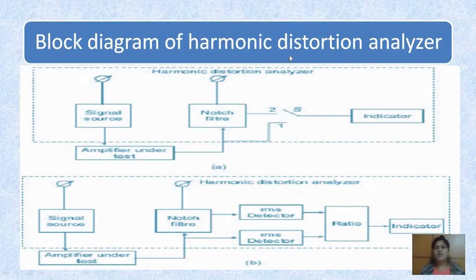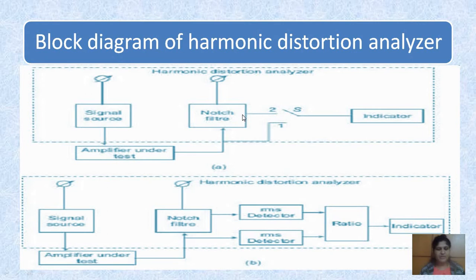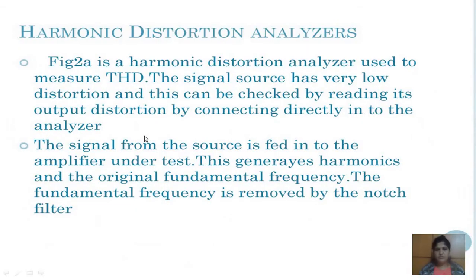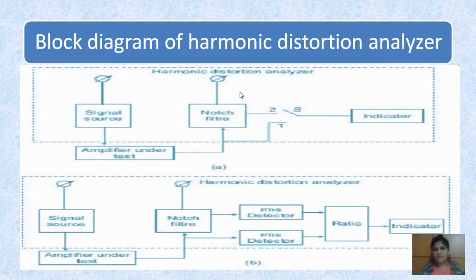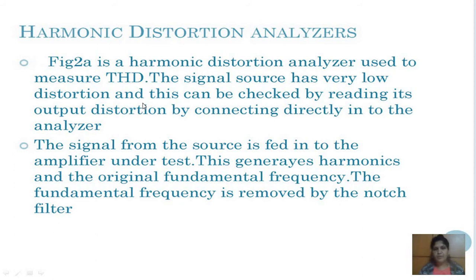This is the block diagram of the harmonic distortion analyzer. The first one is the manual system and the second is the automatic system. This block diagram is used to measure total harmonic distortion, and it consists of a notch filter which is used to suppress the fundamental frequency and pass only the harmonics. The signal source has very low distortion, which can be checked by connecting its output directly into the analyzer. The signal from the source is fed to the amplifier under test, which generates harmonics along with the original fundamental frequency.